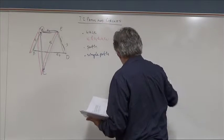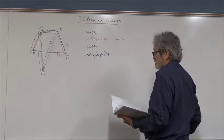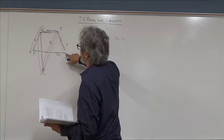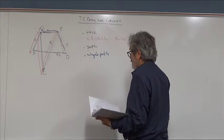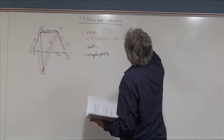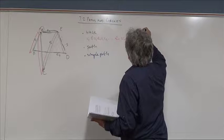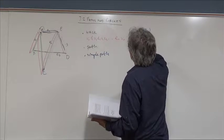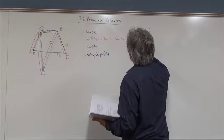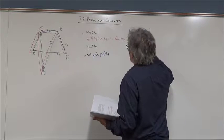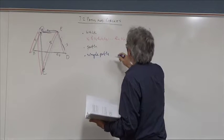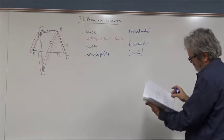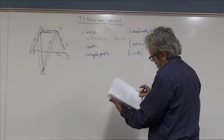Each of these has a closed version, where the beginning and end of the walk are the same vertex. A closed path is called a circuit, and a closed simple path is called a simple circuit or cycle.